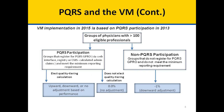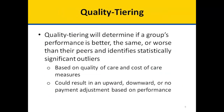The chart on slide 8 shows how you will be assessed the Value Modifier based on whether you participate in PQRS or not, and if you elect quality tiering or not. Quality tiering will determine if a group's performance is better, the same, or worse than their peers, and identifies statistically significant outliers based on the quality of care and cost of care measures. This could result in an upward, downward, or no payment adjustment based on performance.